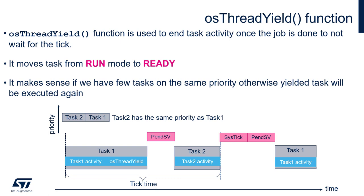Which is again Task 1. There is one disadvantage of the yield function: the next task selected by the scheduler will have at its disposal only the remaining part of the tick time, which is not always the desired amount. Please remember this — it is really important, and maybe not a limitation but an argument to think over whether it is good to call the yield function from the active task.